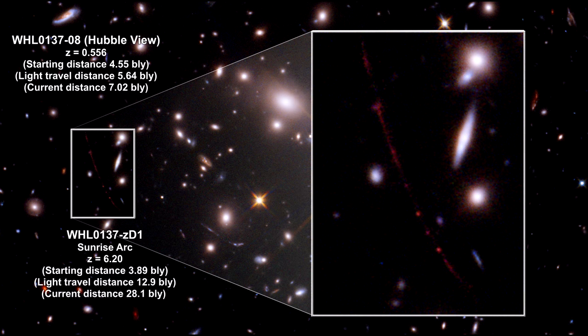The galaxy was only 3.9 billion light years away from the Milky Way when the light we see started its journey. The light traveled 12.9 billion light years to get here, and it is currently 28 billion light years away, receding faster than the speed of light and beyond the visible horizon. No light leaving that galaxy now will ever reach the Milky Way.